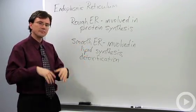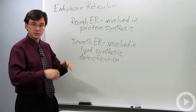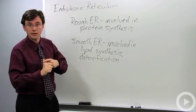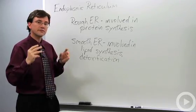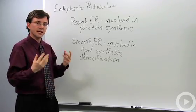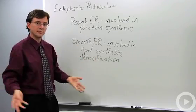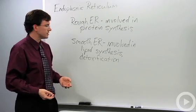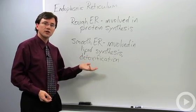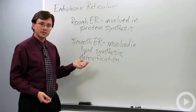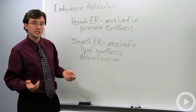The smooth ER is involved in making lipids and steroid molecules, such as cholesterol and testosterone, as well as making the phospholipids that make up all the membranes of all the organelles and the plasma membrane, or cell membrane itself. Additionally, in some cells of your body, they may be involved in the breakdown of some materials — that would be called detoxification.